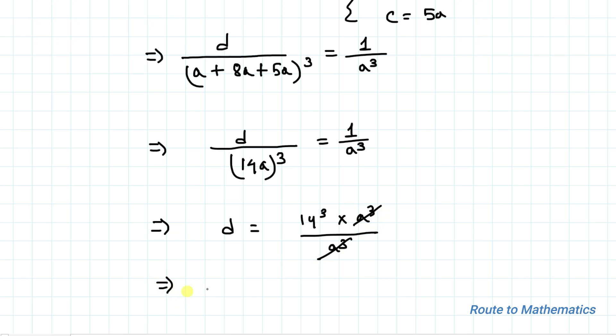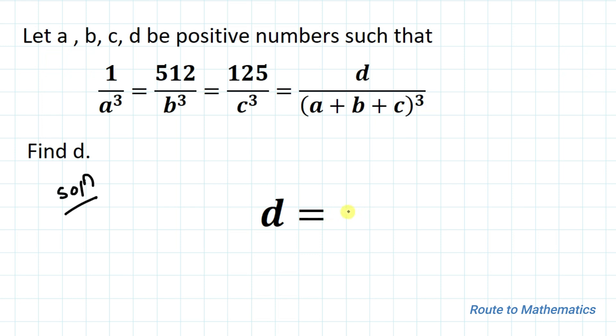This implies d = 14³ = 14 × 14 × 14 = 2744. Thus, the value of d is 2744, which is our answer.